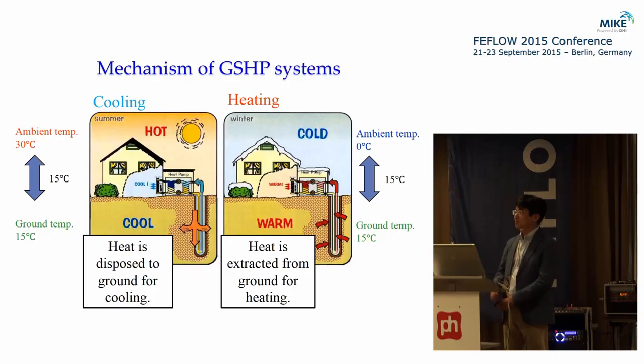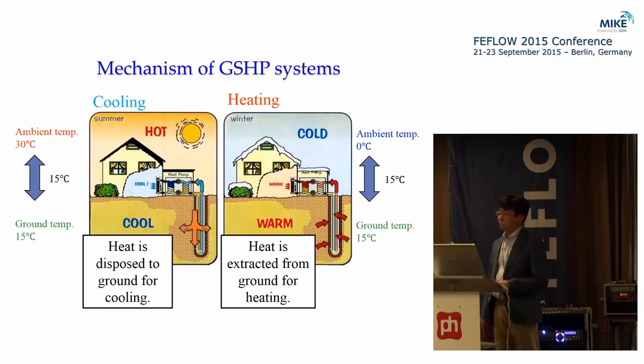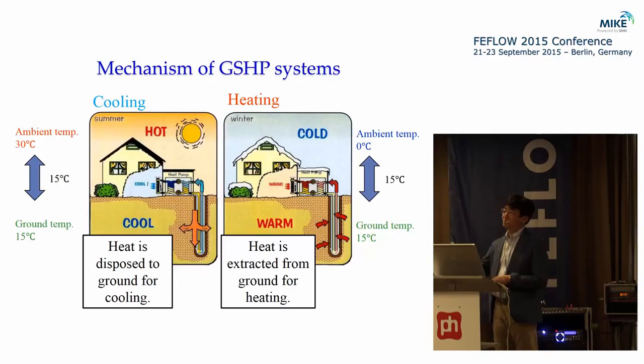This schematic shows the mechanism of ground source heat pumps. We drill a heat exchange well, which is usually 50 to 200 meters deep, near a building or house where we carry out air conditioning. The shallow ground temperature is almost constant below minus five meters or so. In our hometown Akita, the temperature is 15 degrees C.